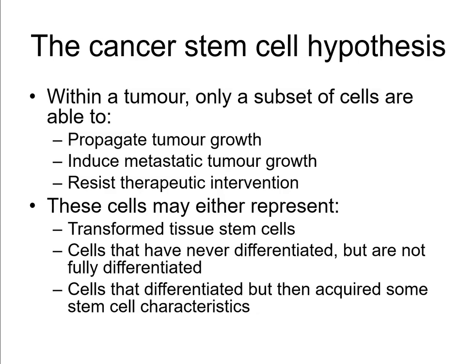This means the majority of a tumour is not able to repopulate that tumour. If you took some random cells out of a tumour and implanted them elsewhere in the body, they would not propagate a new tumour, create a metastasis, or be resistant to chemotherapy — whereas a rare cancer stem cell population might be the root of the cancer.